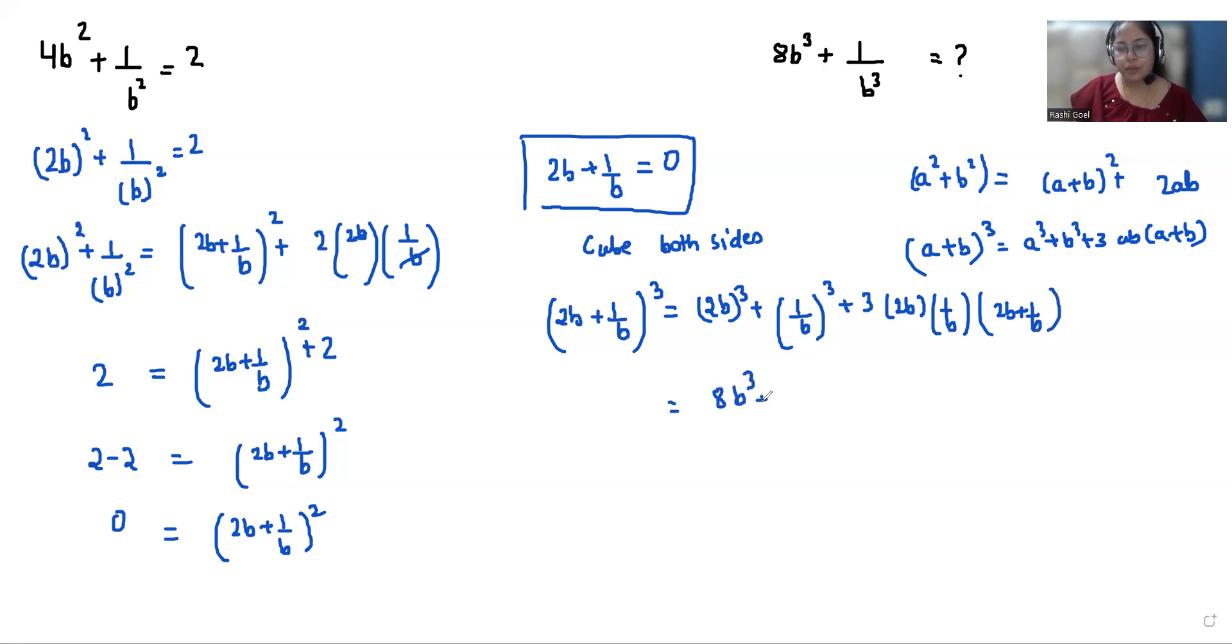So 8b cube plus 1 by b cube plus we can eliminate this, and the value of 2b plus 1 by b is 0. So 3 times 0 equals 0, and 0 whole cube is 0. Therefore 8b cube plus 1 over b cube is also 0.